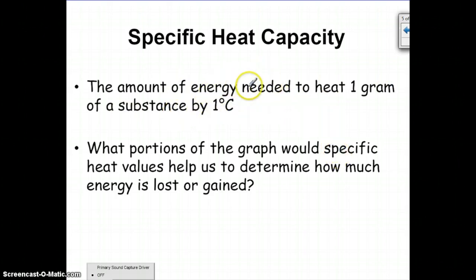It's different for every substance, and it's also different for each state of matter that a substance can have. What portions of the graph would specific heat values help us?